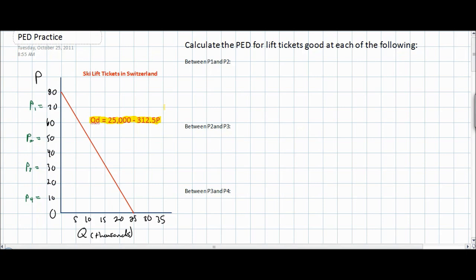We can determine a few things from this equation. We know that at a price of 80 francs the quantity demanded will be equal to zero ski lift tickets. However, if the price of ski lift tickets were zero — in other words free — only 25,000 ski lift tickets would be demanded. So using this information we can begin to calculate the price elasticity of demand for ski lift tickets between a series of prices.